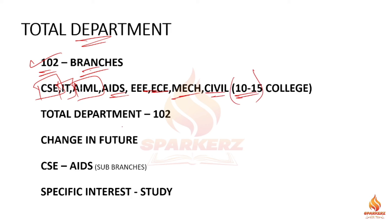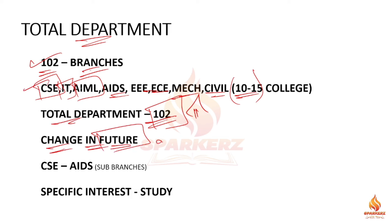But the first thing is there are about 1 or 2 branches. There are 102 departments. That's why some colleges don't have CSE, ITA, etc. But you can see the CSE and AIDA. You can see the future if you have the talent.